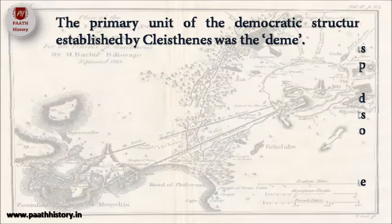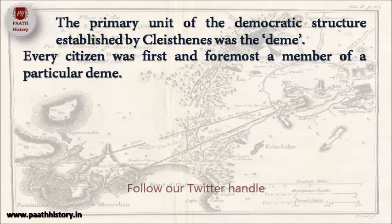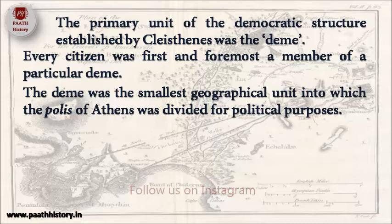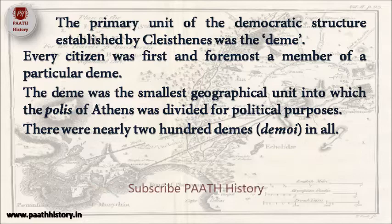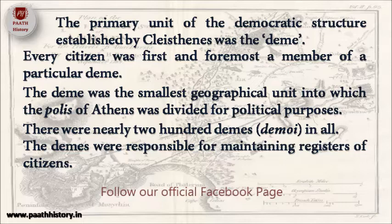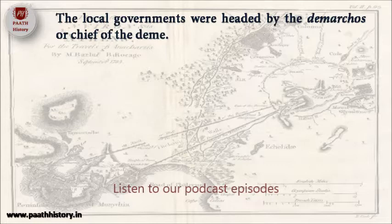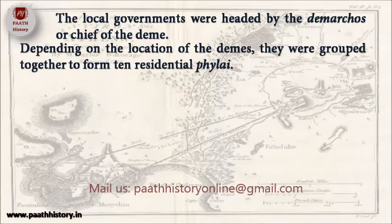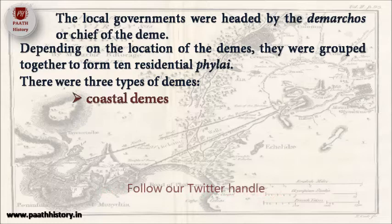The primary unit of the democratic structure established by Cleisthenes was the Deme. Every citizen was first and foremost a member of a particular Deme. The Deme was the smallest geographical unit into which the polis of Athens was divided for political purposes. There were nearly 200 Demes in all. The Demes were responsible for maintaining registers of citizens, and had their own elected governments including an assembly and officials. The local governments were headed by the Demarchos or chief of the Deme. Depending on the location of the Demes, they were grouped together to form 10 residential Philae. There were three types of Demes: coastal Demes, city Demes, and rural Demes in the interior.